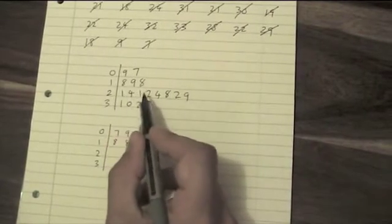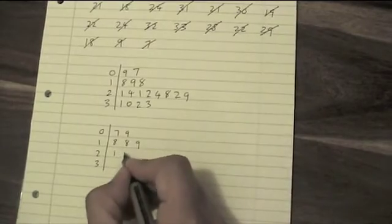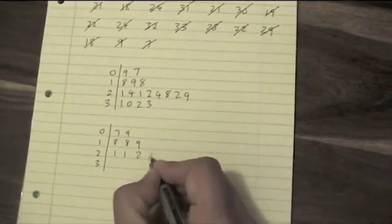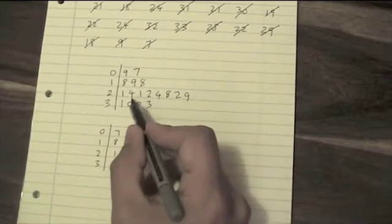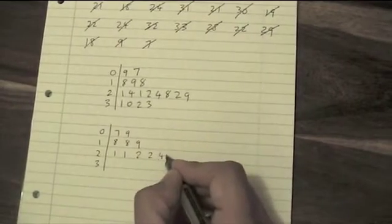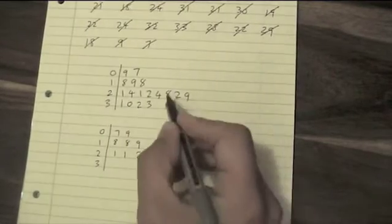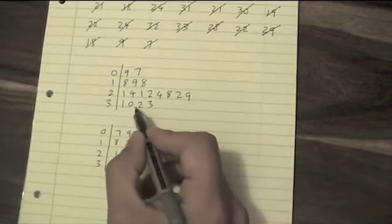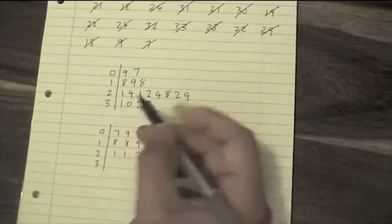This one's going to have a 1, 1, 2, 2, 4 and a 4, an 8 and a 9. This row is going to be a 0, 1, 2, 3.